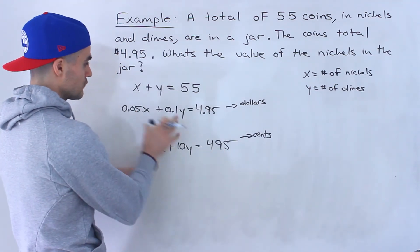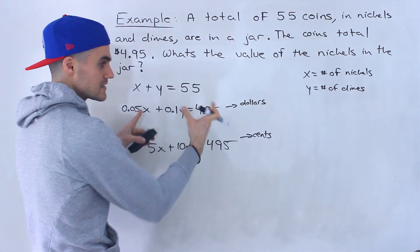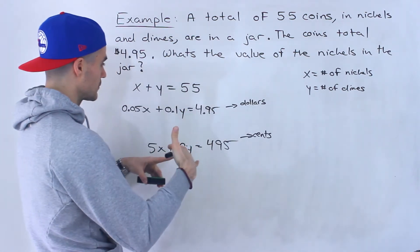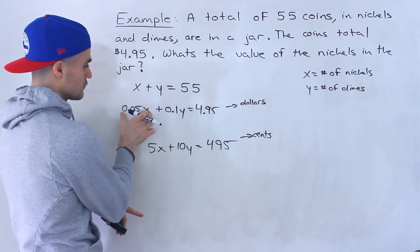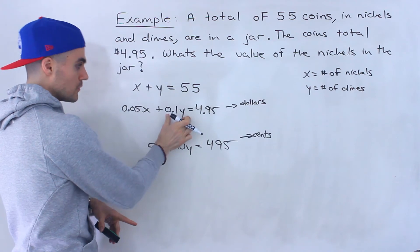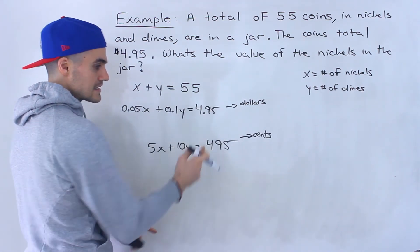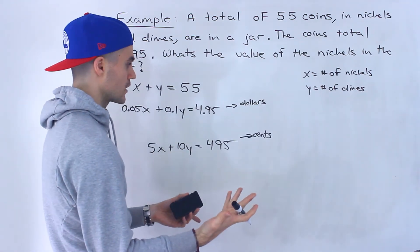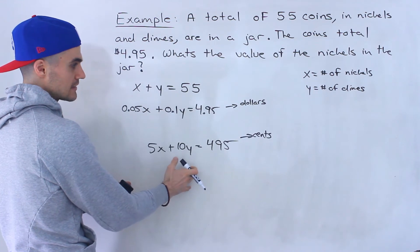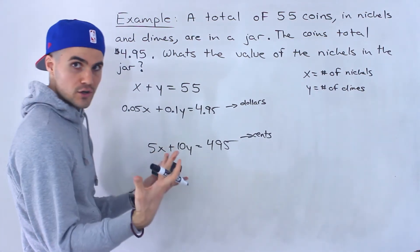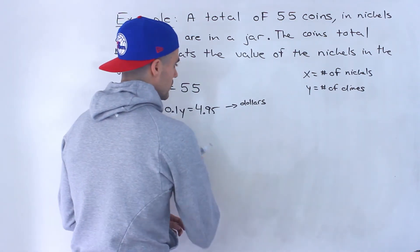And we can go from here to here if we just take this and multiply everything by 100. We can multiply the left side and right side by the same number and it will keep the same equation. So if we multiply this by 100, we'd get 5. Multiply this by 100, we get 10. Multiply this by 100, we get 495. So this and this, they're the exact same equation. We just took this, multiplied it by 100 to get this. So you can do either one. You're going to get the same answer. I'm just going to work with the decimals.